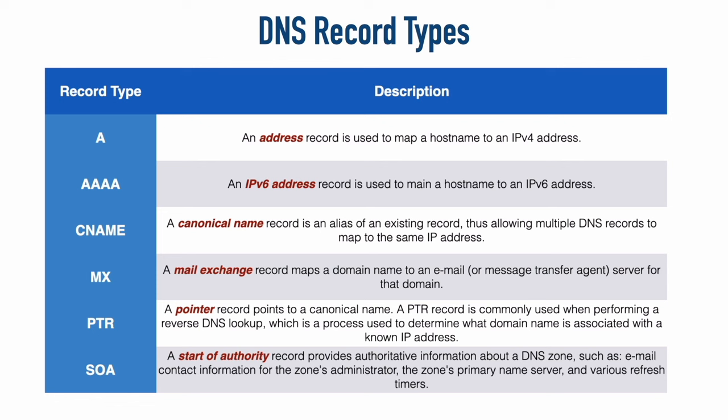There's also a CNAME, or canonical name record — another name for an existing record. For example, if you already have an A record for kwtrain.com but also want it known as kevinwallestraining.com, a CNAME record serves as an alias. Within kwtrain.com, an MX record points to mail servers for the domain. A PTR, or pointer record, works hand-in-hand with reverse DNS lookups: instead of providing a domain name to get an IP address, you provide an IP address to get the corresponding fully qualified domain name.